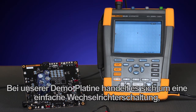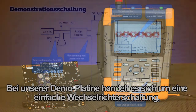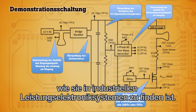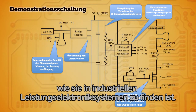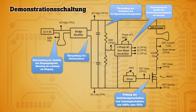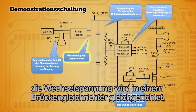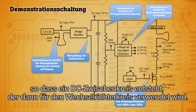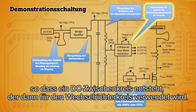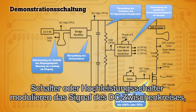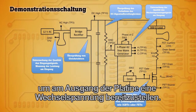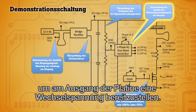The demo board we're using today is a basic inverter circuit that you might find in industrial power electronic systems. It starts with the input circuit. The AC goes through a bridge rectifier, creating a DC bus that will then be used in the inverter circuit. Switches, or high-powered switches, modulate this DC bus to provide an AC waveform on the output of the board.